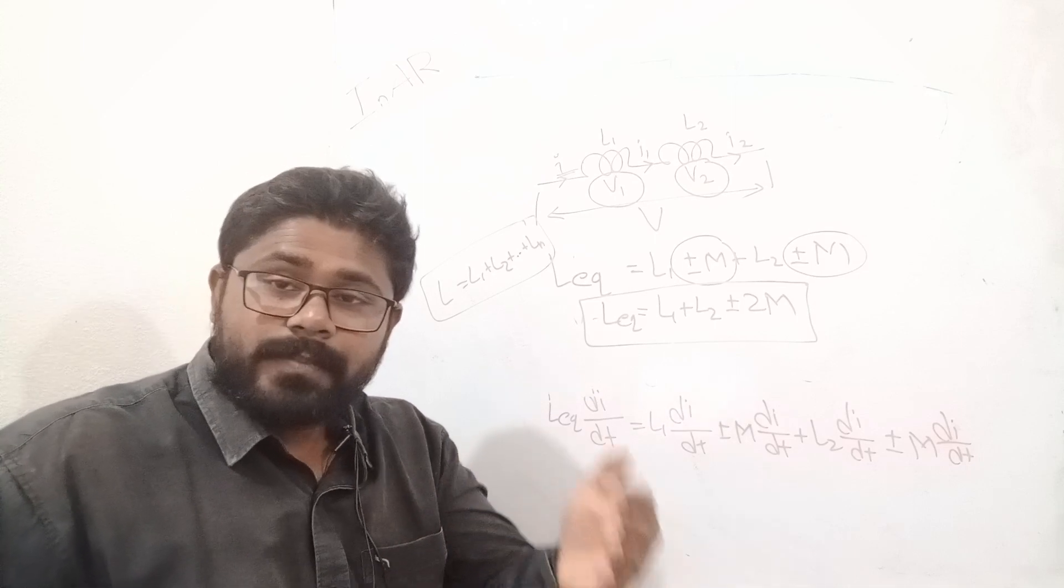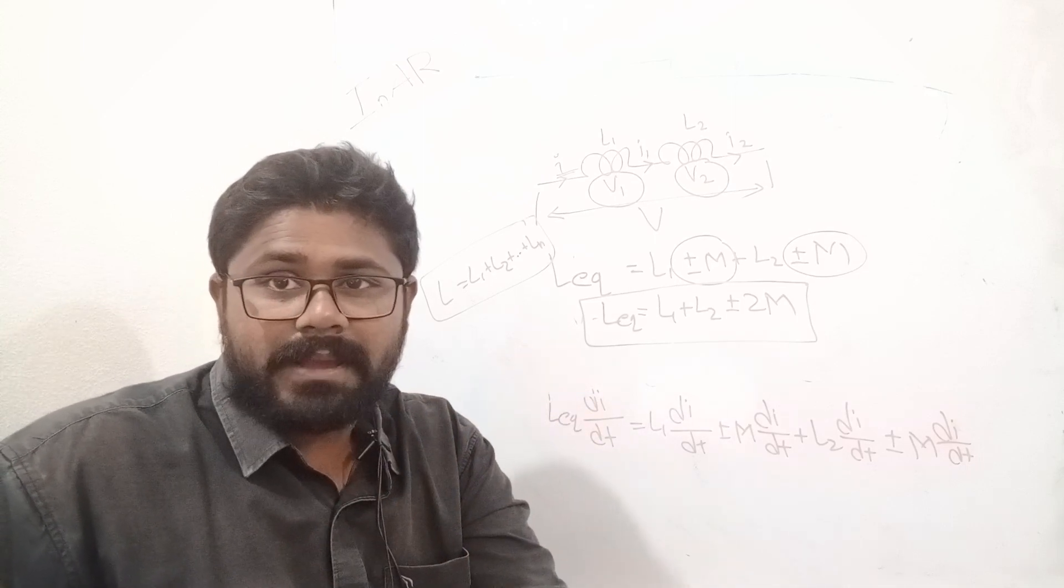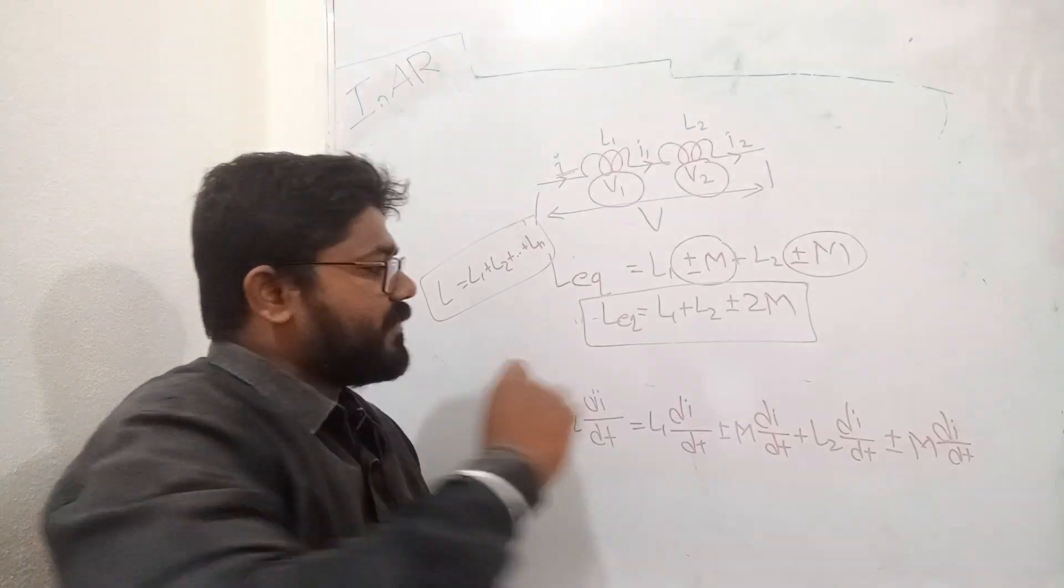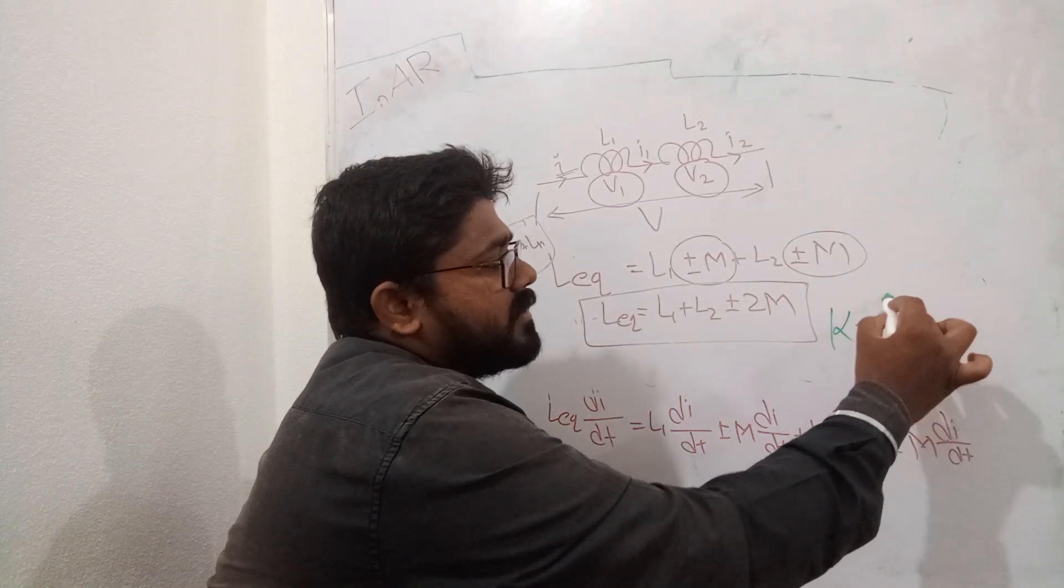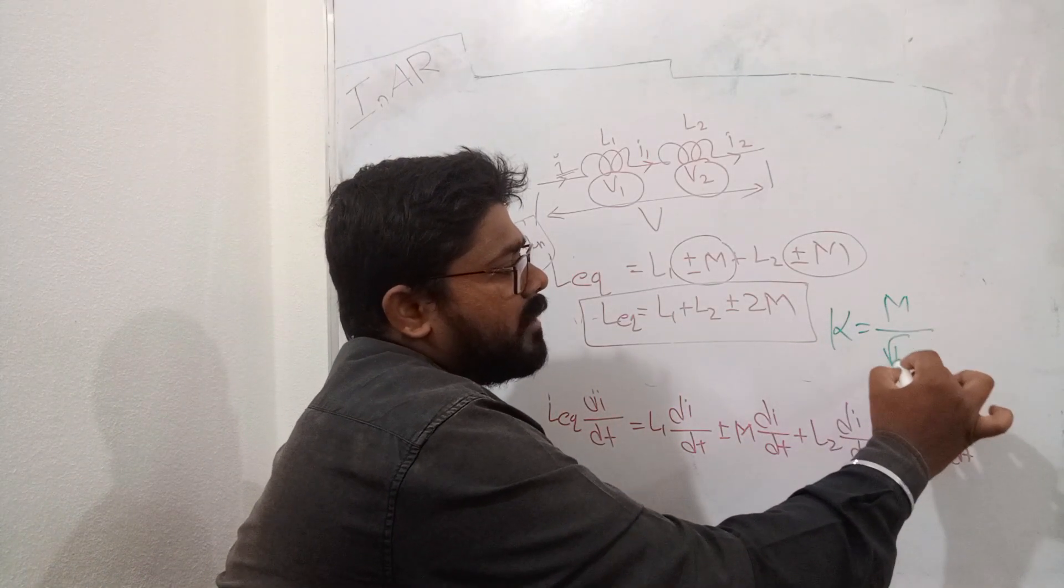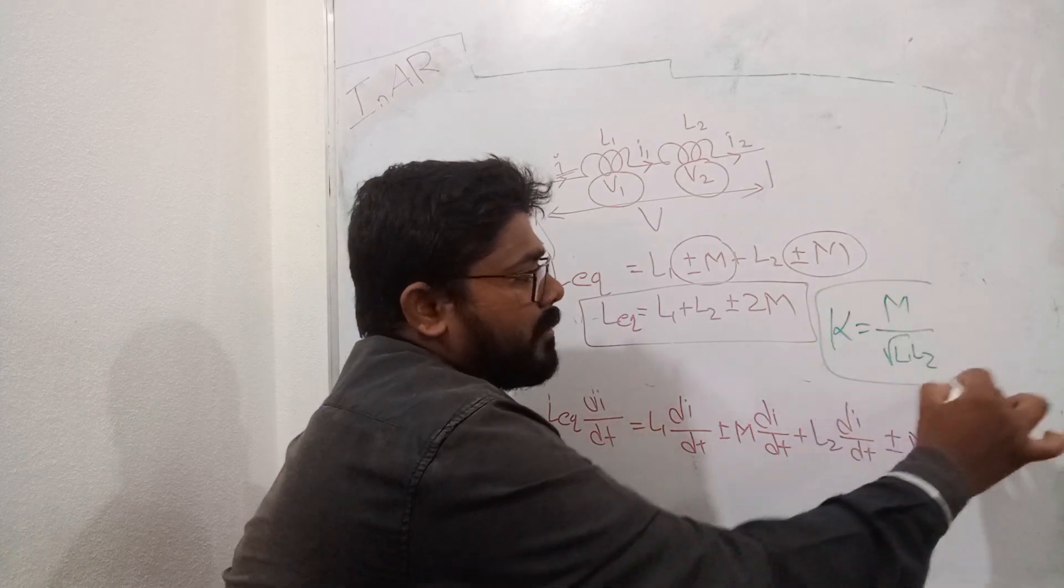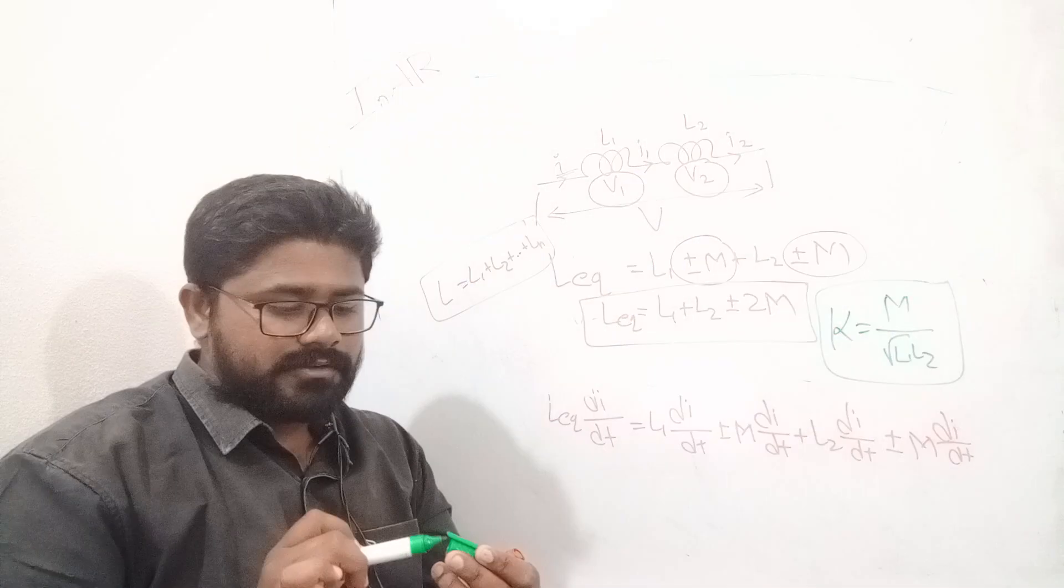Question lo, mutual inductance e leedhu kani coefficient of magnetic coupling eichin naan kondi. Coefficient of magnetic coupling k equals m divided by root over L1 L2. Malli ikkada goda manamu, e formula use jeskons untadhi.